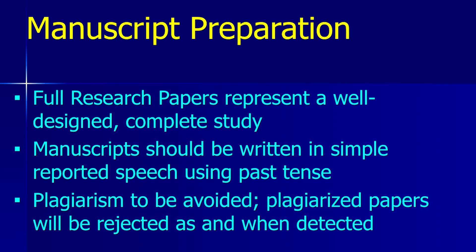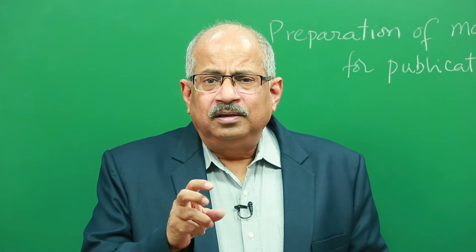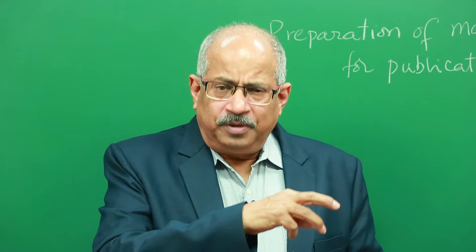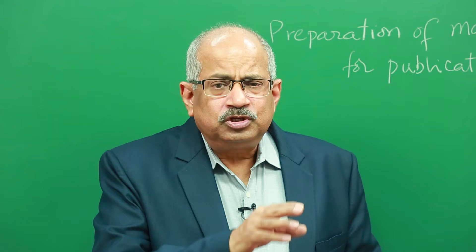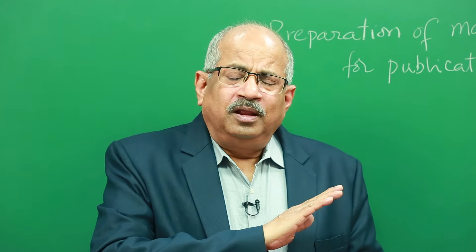What is the problem with plagiarism? If plagiarism is detected early, the manuscript will be rejected by the journal. Suppose the manuscript has already been published but is found to be plagiarized — authors might think it's already published and nothing can be done. But that's not true. If plagiarism is found at a later point, the manuscript will be retracted from the journal and will no longer appear as a published report.